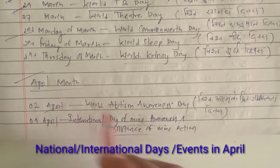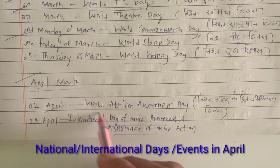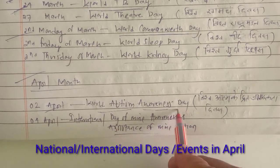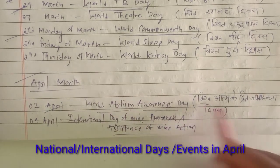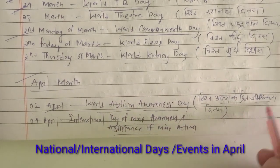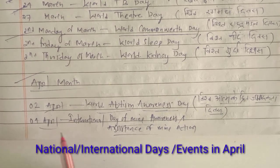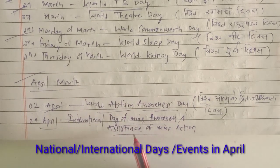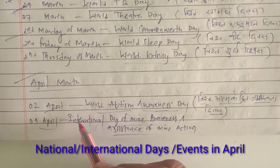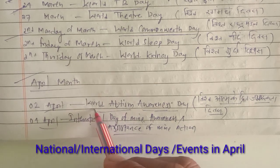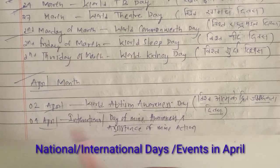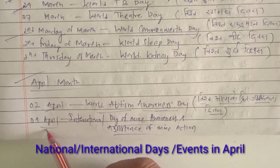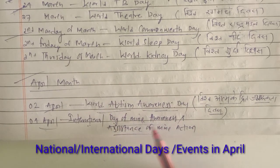The first one is 2nd April — World Autism Awareness Day, known as Vishwa Atma Kendrit Jagrupta Divas. The 4th April is International Day of Mine Awareness and Assistance of Mine Action. So these are the two important days: 2nd April is World Autism Awareness Day, and 4th April is International Day of Mine Awareness and Assistance of Mine Action.